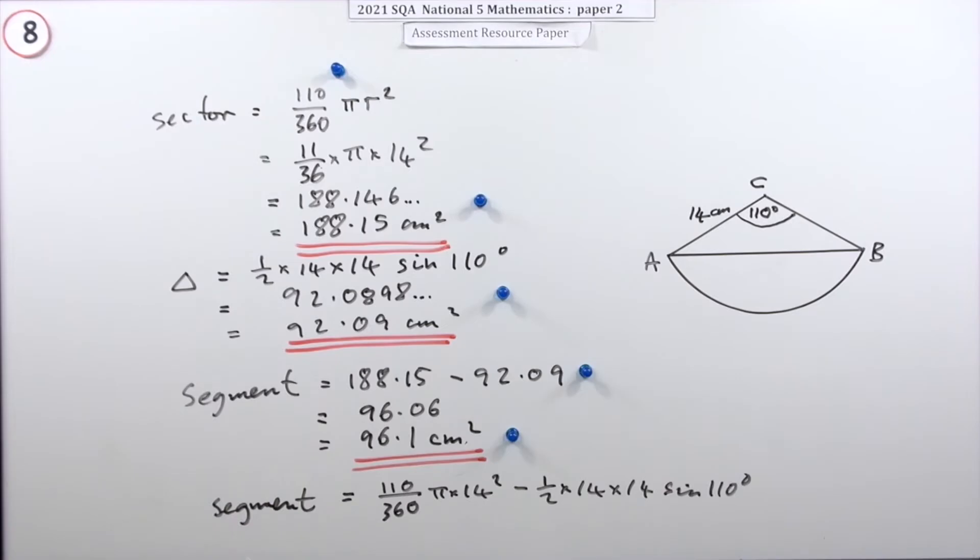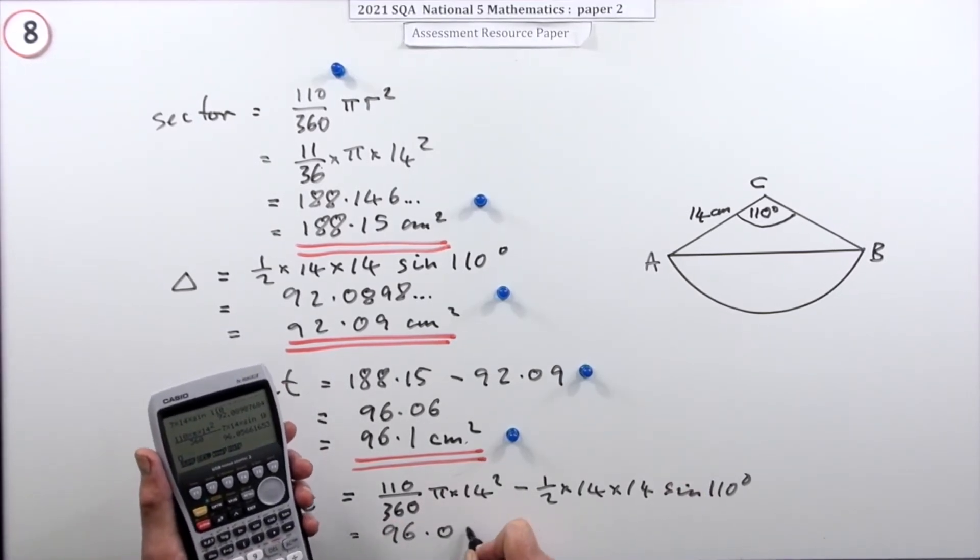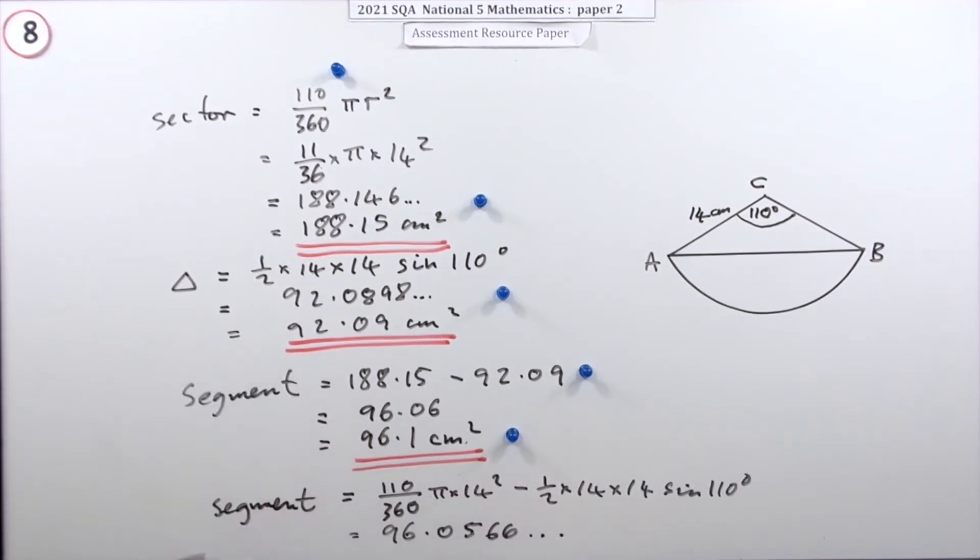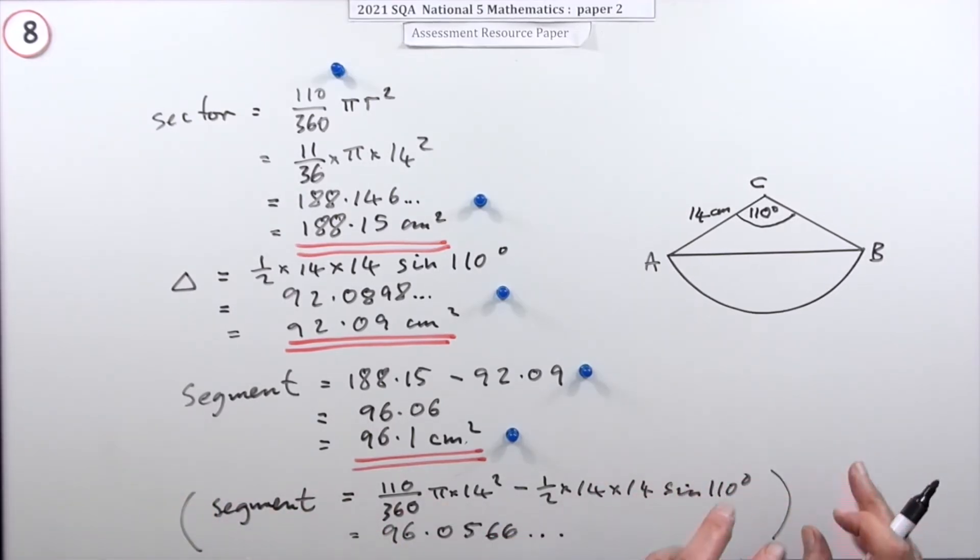Type that lot in and press the button for the completely accurate answer: 96.0566 and so on, which rounds to the same thing. There's no indication of how they'd mark it if you did it in one go. You'd probably be better saying the shaded segment equals the sector minus the triangle, then putting those parts in. When you do all in a line, you can find common factors to simplify - like there's 14 squared and 14 squared, they could come out.